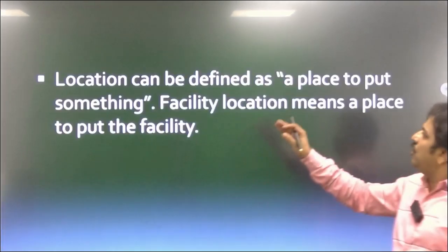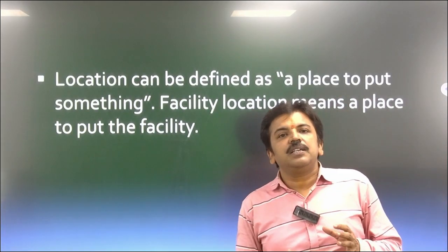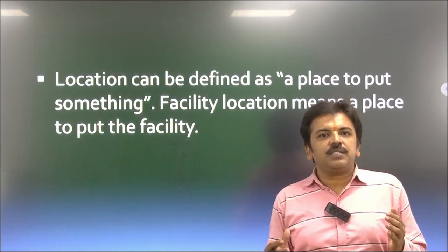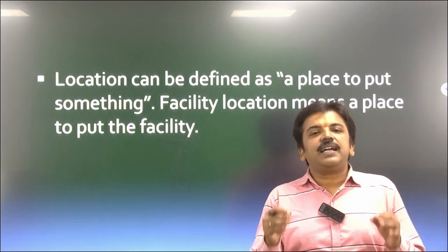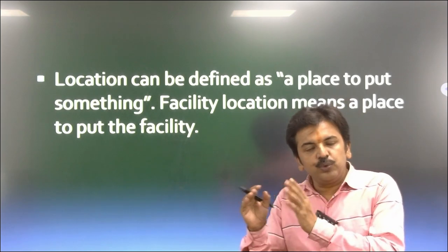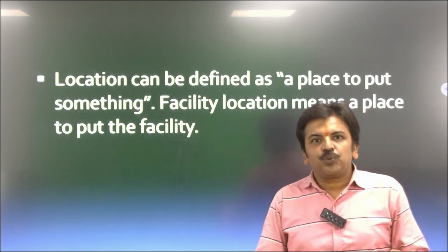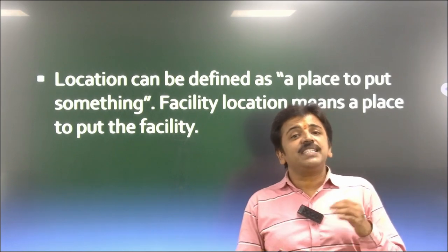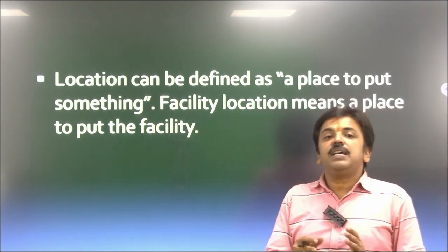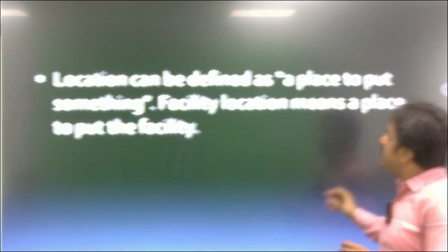Location can be defined as a place to put something. As a production manager, you must have proper knowledge and wisdom to define what is the suitable place for application of tools, machines, raw materials, and the plant layout. Facility location means providing that facility at a specific place, which is known as facility location.